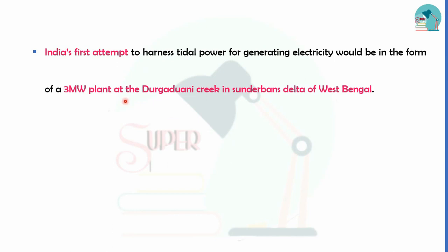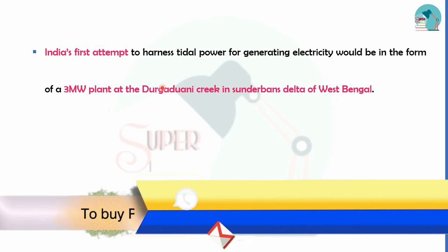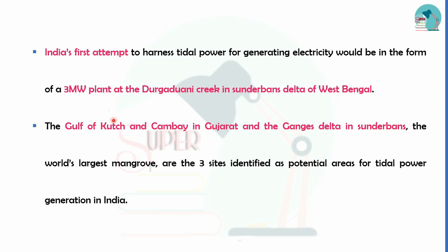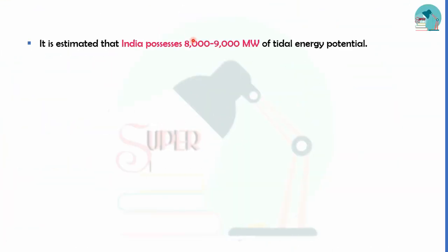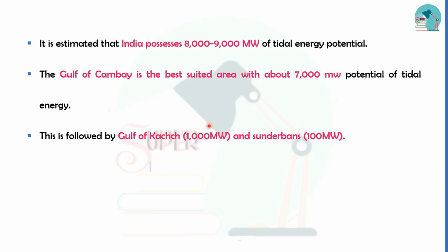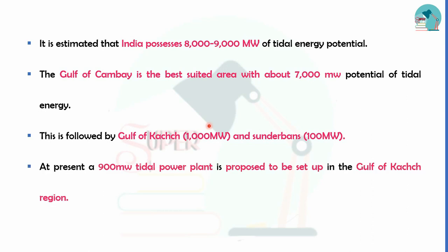India's first attempt at tidal energy started with a 3 megawatt plant at Durga Durani in the Sundarbans delta of West Bengal. Key potential sites include the Gulf of Kutch, Khambhat in Gujarat, and the Ganges delta in Sundarbans. India has a total tidal energy potential of 9,000 MW — Gulf of Khambhat alone is best suited for 7,000 MW, while Gulf of Kutch and Sundarbans can produce around 100 MW.